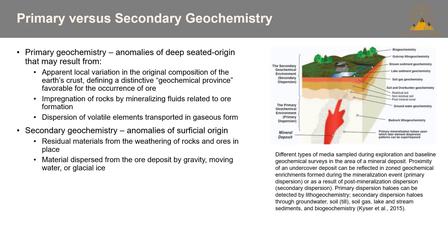Switching gears, it's important to talk about what you're going to be tracking in your geochemical dataset — namely, are you looking at primary or secondary geochemistry? For primary geochemistry, we're looking at anomalies of deep-seated origin that may result from apparent local variation in the original composition of the Earth's crust, defining distinctive geochemical provinces favorable for the occurrence of ore, impregnation of rocks by mineralizing fluids related to ore formation, or dispersion of volatile elements transported in gaseous form.